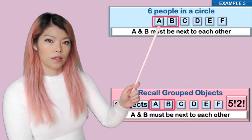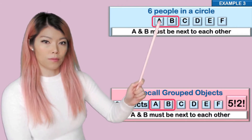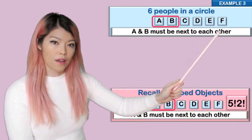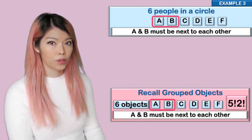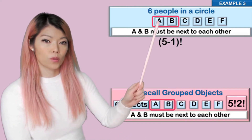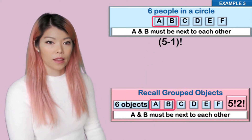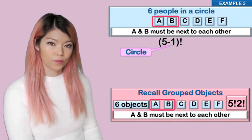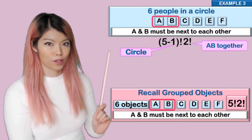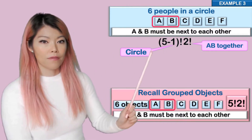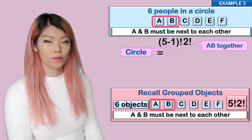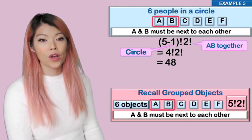So there are six people but we treat it as five objects. In a circle we do (5 − 1) factorial, and then multiply by the number inside the group, which is two. So we have (5 − 1) factorial times two factorial, which is four factorial times two factorial, giving us 48.